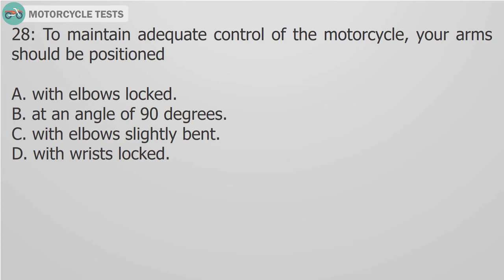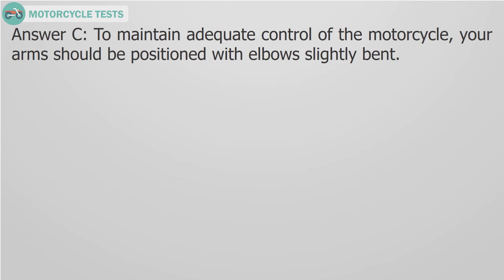Question 28. To maintain adequate control of the motorcycle, your arms should be positioned: A. With elbows locked. B. At an angle of 90 degrees. C. With elbows slightly bent. D. With wrists locked. Answer C. To maintain adequate control of the motorcycle, your arms should be positioned with elbows slightly bent.